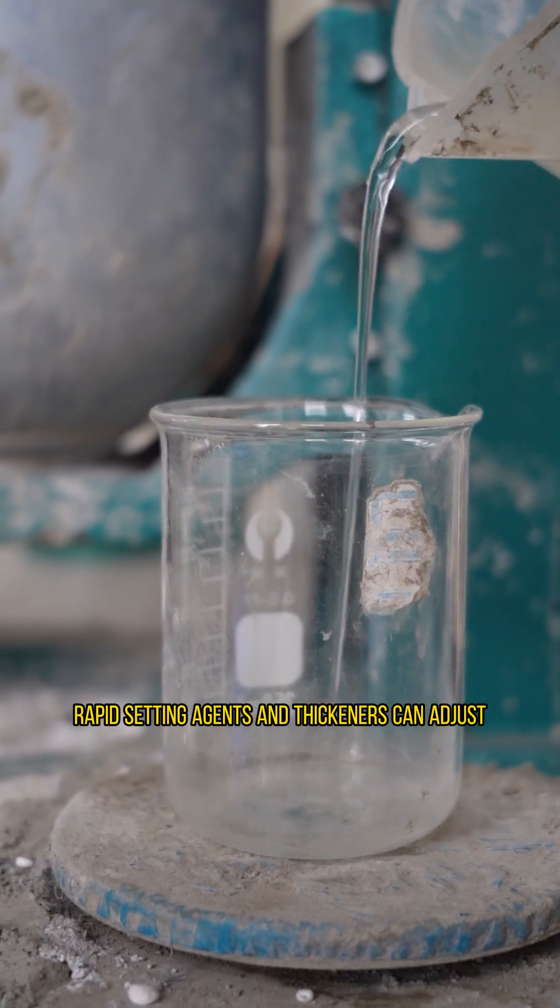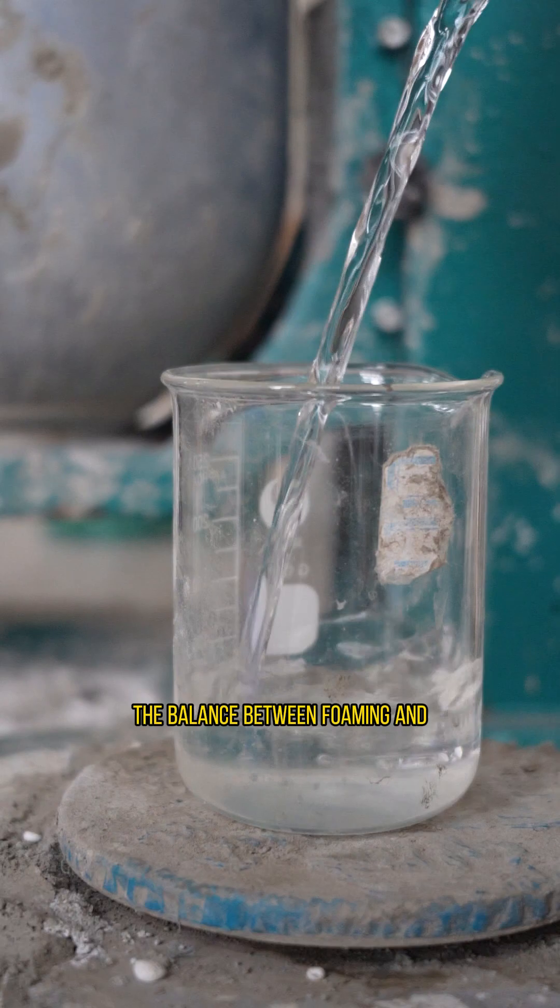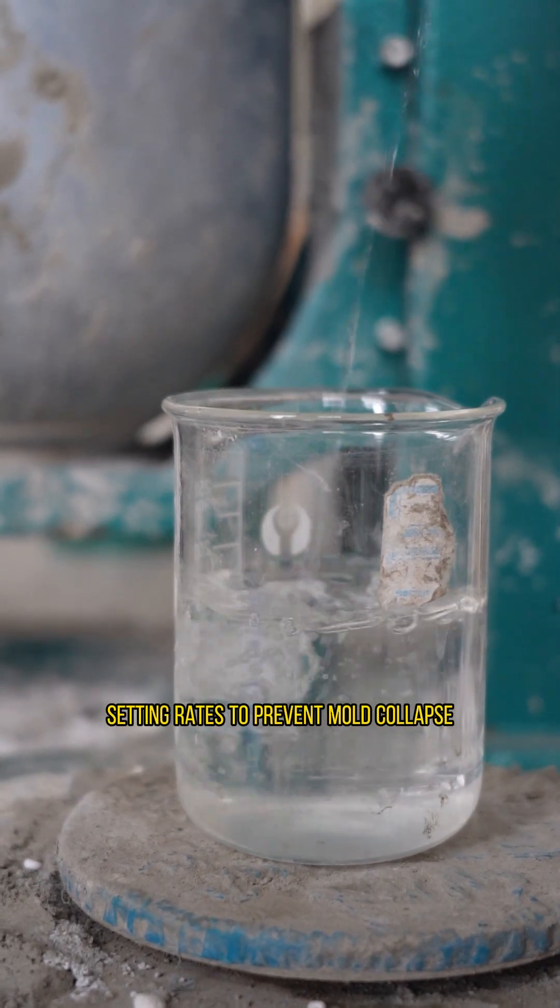Rapid setting agents and thickeners can adjust the balance between foaming and setting rates to prevent mold collapse.